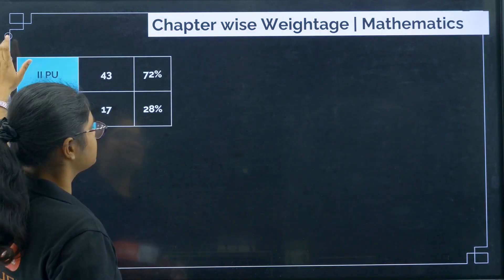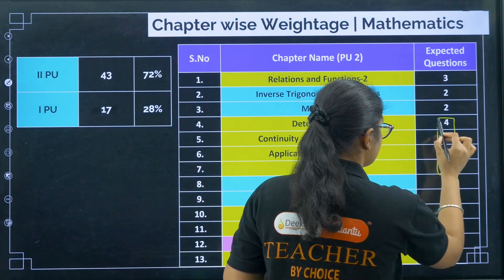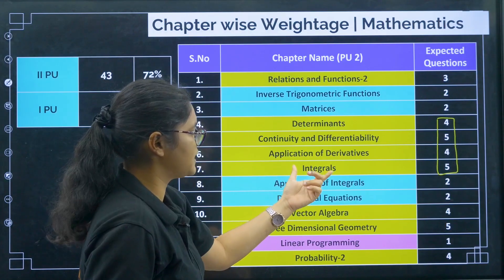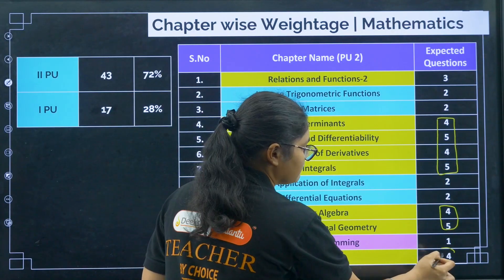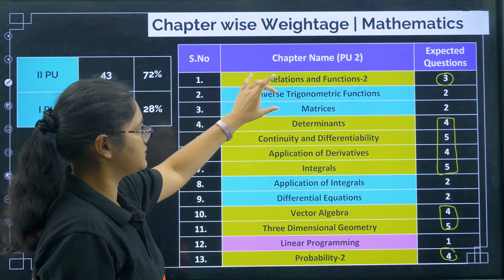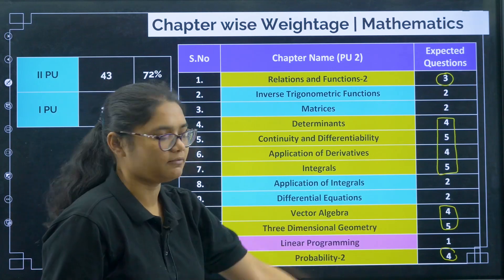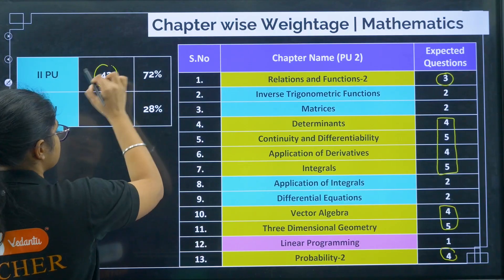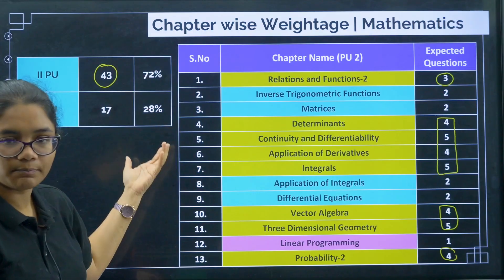Now let's discuss the maths syllabus. High weightage topics with 4 to 5 questions each include Determinants, Continuity and Differentiability, Application of Derivatives, and Integrals. Vector Algebra and 3D Geometry also give 4 to 5 questions. Probability gives 4 questions. Relations and Functions gives 3 questions. Almost 43 questions out of 60 can be from your PU2, and 17 questions will be from PU1.